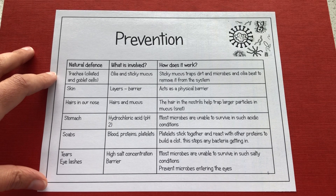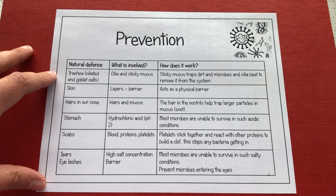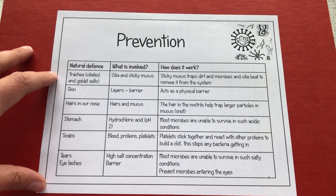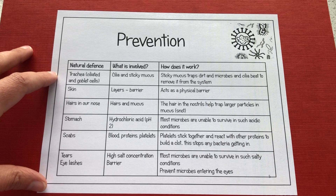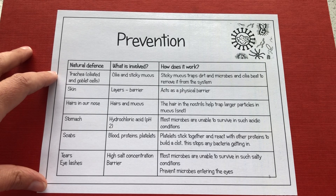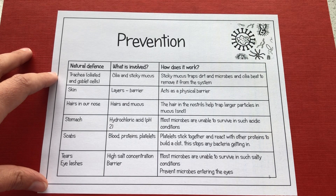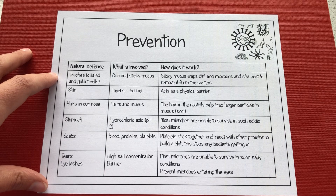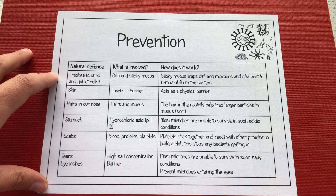In our blood we have platelets, which are fragments of cells, and they can cause scabs to form. So if we do cut ourselves, we're able to block that cut using those platelets forming a scab, so nothing can get into our skin. We've also got tears, which have a high salt concentration, and eyelashes, which help to prevent microbes entering. The microbes can't cope in those salty conditions of the tears, so they are not able to survive to get into the body.